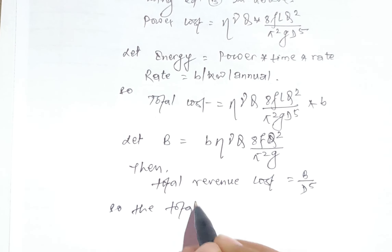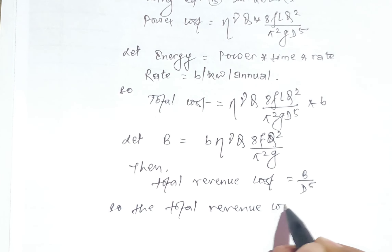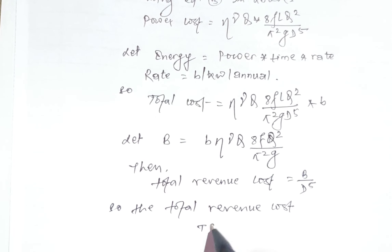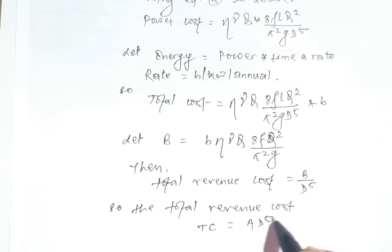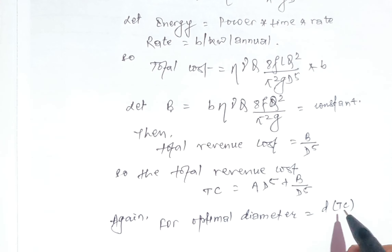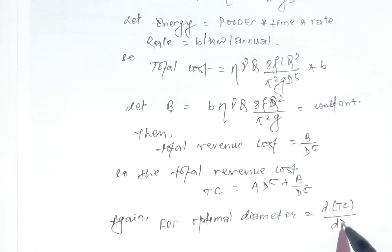The total cost can therefore be expressed as: total cost equals A·d² plus B divided by d⁵, where the value of B and the value of A are the constants derived previously. Now, to find the optimal diameter, we set d(total cost)/dd equals zero.